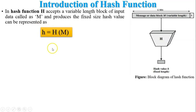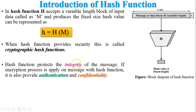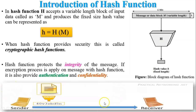When a hash function provides security, it is called a cryptographic hash function. Hash functions protect the integrity of the message — integrity means the message should not be altered by any other user. If encryption is applied on messages with a hash function, it also provides authentication and confidentiality. When we achieve authentication, integrity, and confidentiality, we can apply the concept of digital signature in the hash function — this is called a hash code based digital signature.